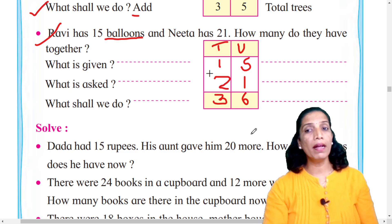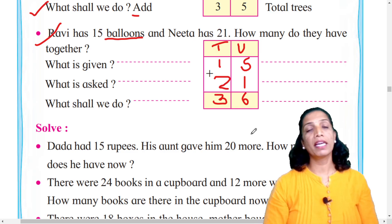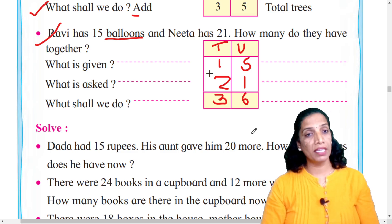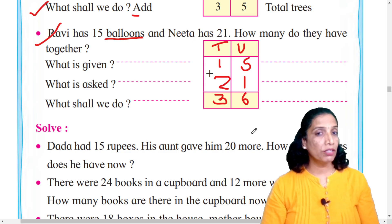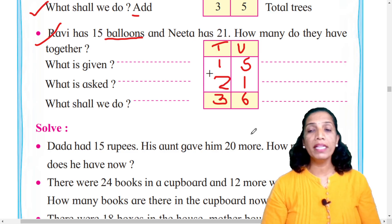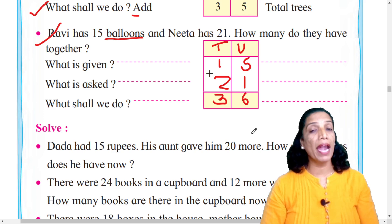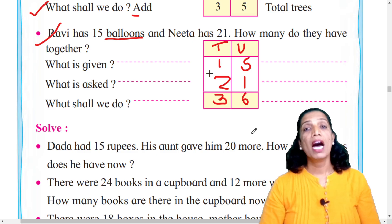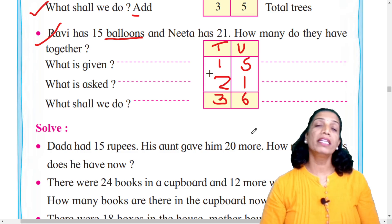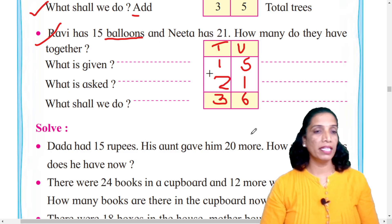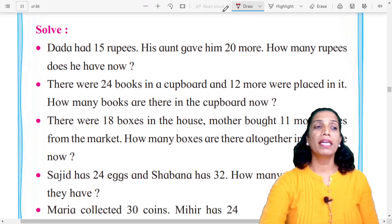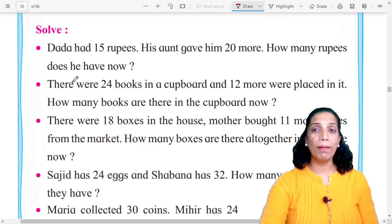Understand? Don't be confused — there are 3 questions, write the answers, and do the addition. One important thing to remember: when the question says 'all together,' that means we need to do addition. Read the problem carefully and decide which operation to perform. This is very important to practice fully. Now let's move ahead — here are examples for you to solve yourselves.